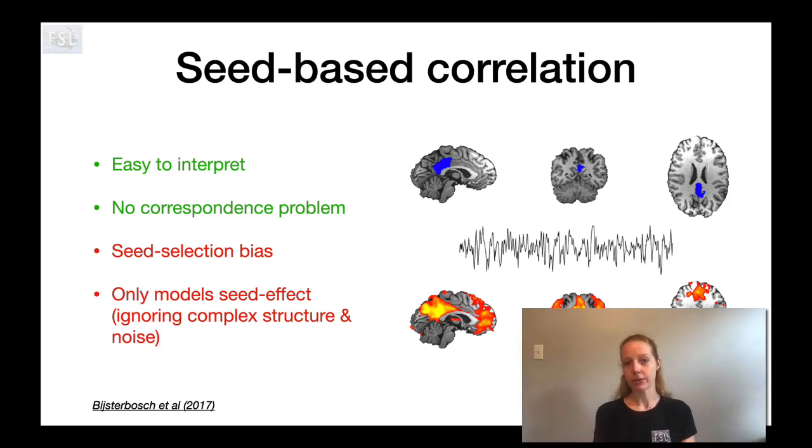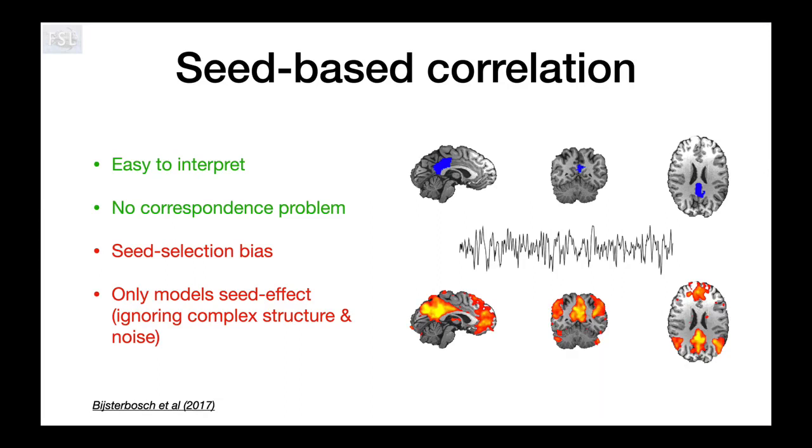Let's start off with seed-based correlation analysis. The idea here is that you pick one region of the brain, so for example in the figure the blue region at the top which is in the posterior cingulate cortex, and then you extract an average time series from that seed region of interest across all of the voxels that are included in the seed. Then you calculate the correlation coefficient for every voxel of the brain with that seed time series and that gives you a map as you can see at the bottom here which is a whole brain map of connectivity or correlation with the region of interest. This was one of the first methods that was used in resting state fMRI and it's really easy to interpret, it's really intuitive to think about this map as being the posterior cingulate connectivity map whole brain connectivity map.